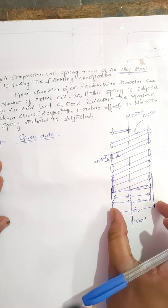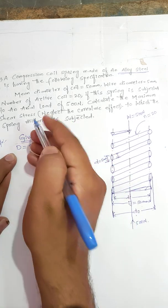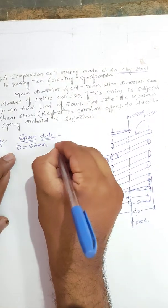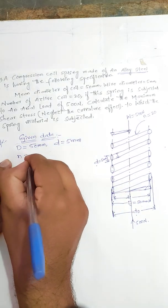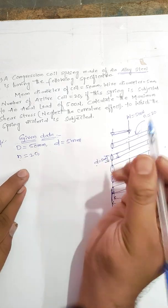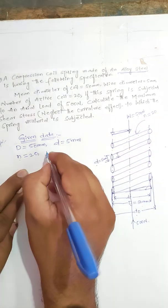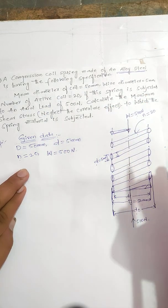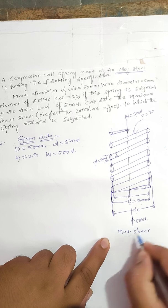Writing the given data: mean diameter of the coil, capital D = 50 mm. Wire diameter, small d = 5 mm. Number of active coils, small n = 20. Axial load, W = 500 Newton. What we need to find out is the maximum shear stress.